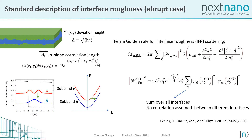The description of interface roughness in the case of an abrupt interface is well-established in the literature. In this case, there is a well-defined position of the interface, and two quantities are usually defined to characterize the interface properties. If we call h the deviation height of the interface position with respect to its average position, the root-mean-square deviation delta can be defined. The second important quantity is the in-plane correlation length, which can be defined from the height deviation correlation function, and a typical form extracted from experiments is the Gaussian correlation function. The scattering rate between two sub-bands alpha and beta can be expressed using the Fermi golden rule. Due to energy conservation, as it is an elastic process, the transition energy between sub-bands alpha and beta has to be transferred to the in-plane kinetic energy, as represented in the energy dispersion of the sub-bands.